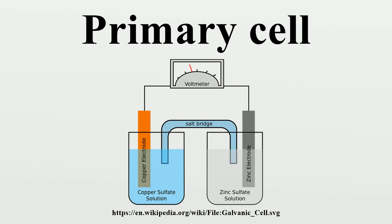Attempts have been made to make simple cells self-depolarizing by roughening the surface of the copper plate to facilitate the detachment of hydrogen bubbles with little success. Electrochemical depolarization exchanges the hydrogen for a metal, such as copper or silver.